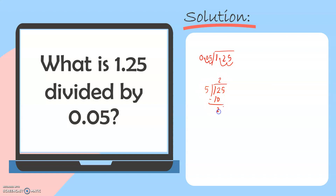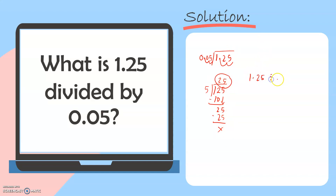12 minus 10 is 2. Then we bring down 5. 25 divided by 5 is 5, and 5 times 5 is 25. We no longer have a remainder or a digit to bring down. So our final answer is 25. Therefore, 1.25 divided by 0.05 is equal to 25.